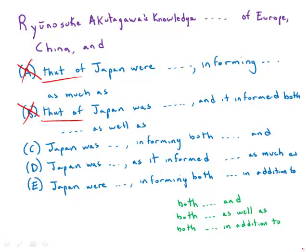Second of all, the subject of the sentence is the word 'knowledge,' and knowledge is singular. So we need a singular verb. We have that singular verb in three of the answer choices, but it's a plural verb in two of the answer choices. That also eliminates E. Right away that narrows this down to two answer choices.